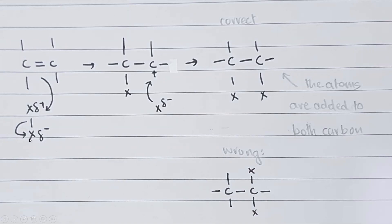The next halogen, which has accepted electrons, has a partial negative charge. A carbocation is formed because electrons are lost from this bond and transferred to the halogen, giving it a positive charge. Electrons are then transferred from the halide to the carbocation, forming two bonds. Remember — the atoms are added to both carbons across the double bond, not on the same carbon or same axis.